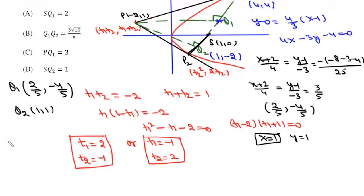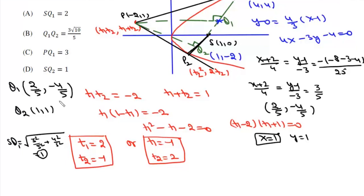Now we find SQ1. SQ1 equals the square root of (1 minus 2/5) squared plus (0 minus (minus 4/5)) squared, which is (3/5) squared plus (4/5) squared, equal to 9/25 plus 16/25, which equals 1. SQ2 is also 1. So regardless of which case we take, SQ1 always equals 1, meaning option A is incorrect.